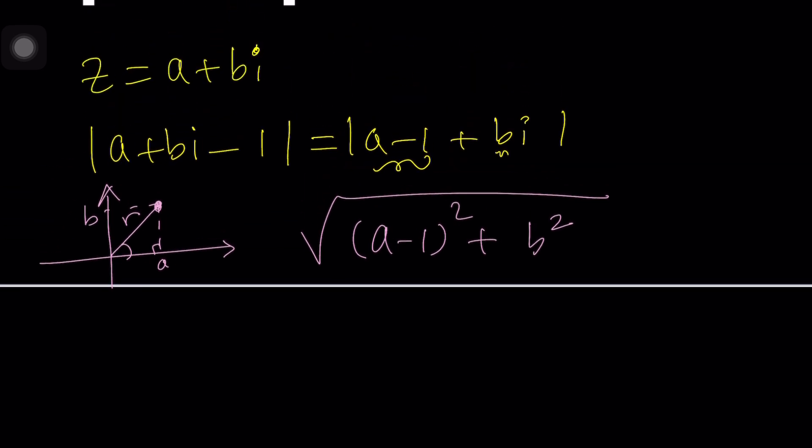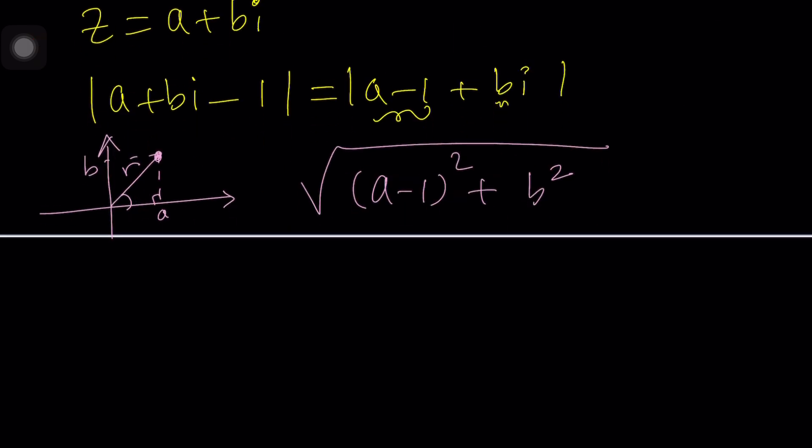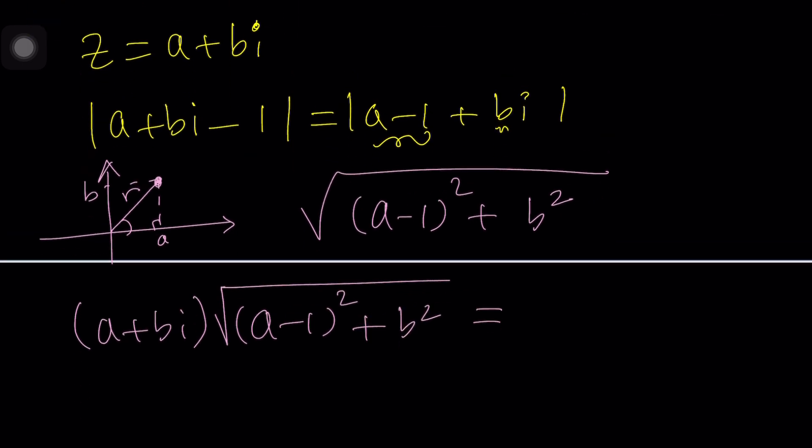Now we want this times z to equal that. Absolute value of a complex number is real so we multiply z by a real number and get 20 plus 20i. Let's plug it in. We have a plus bi which is z multiplied by the absolute value square root of (a-1)² + b² equals 20 plus 20i.